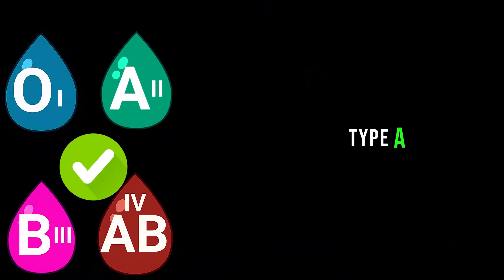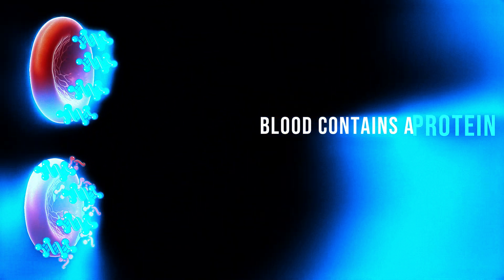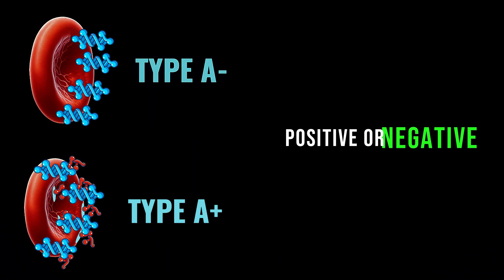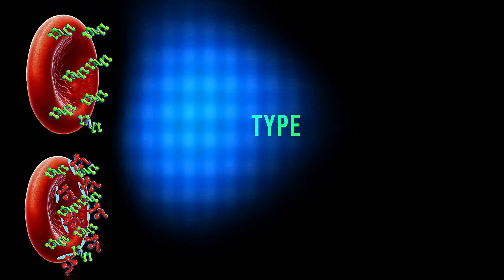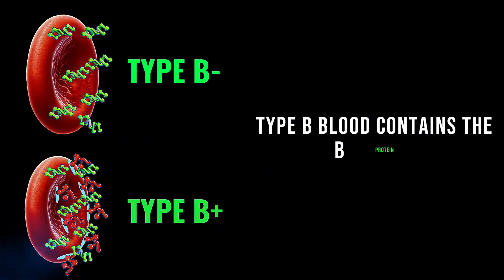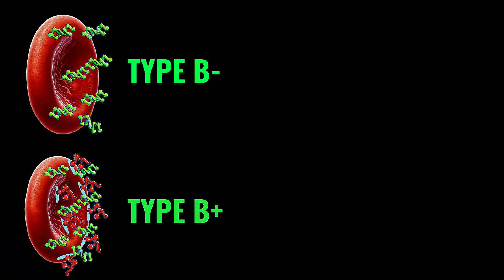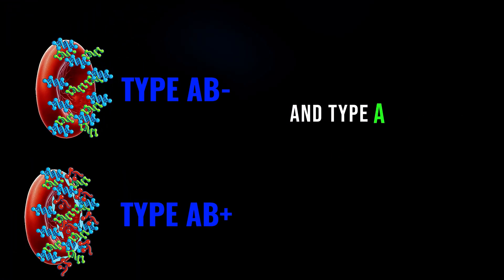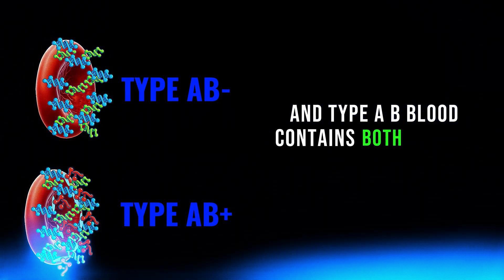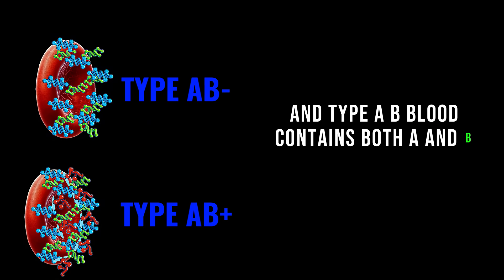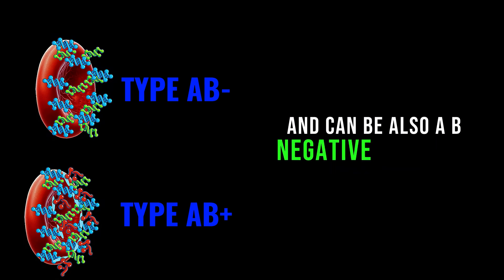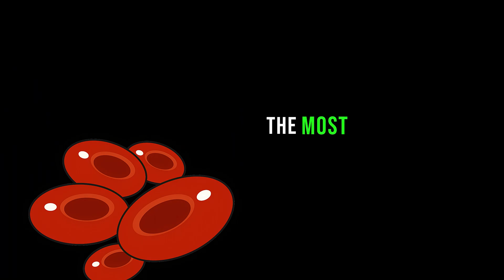Type A blood contains the A protein and can be either Rhesus positive or negative. Type B blood contains the B protein and can be either positive or negative. And type AB blood contains both A and B proteins and can also be AB negative or positive.